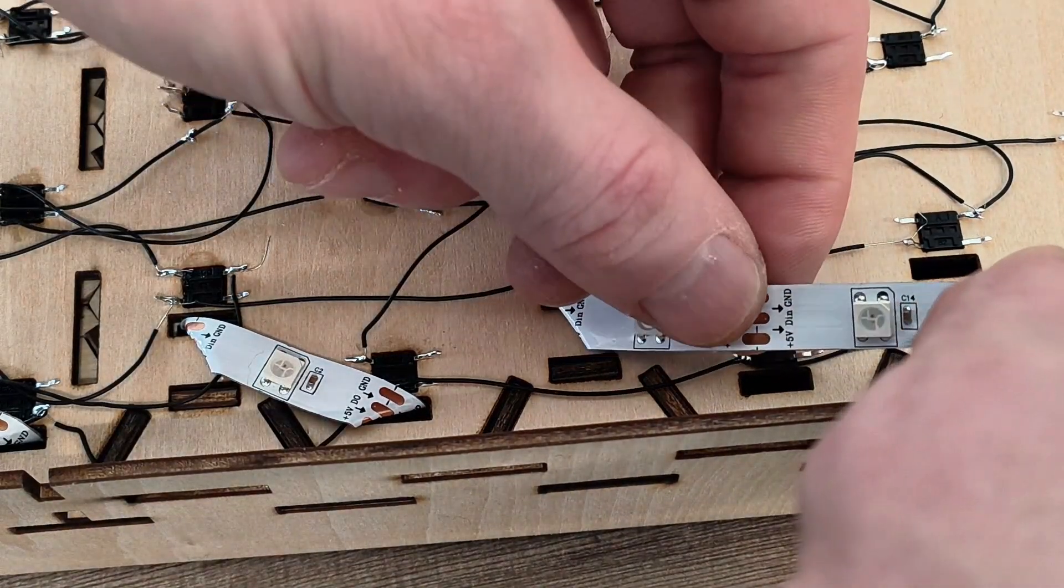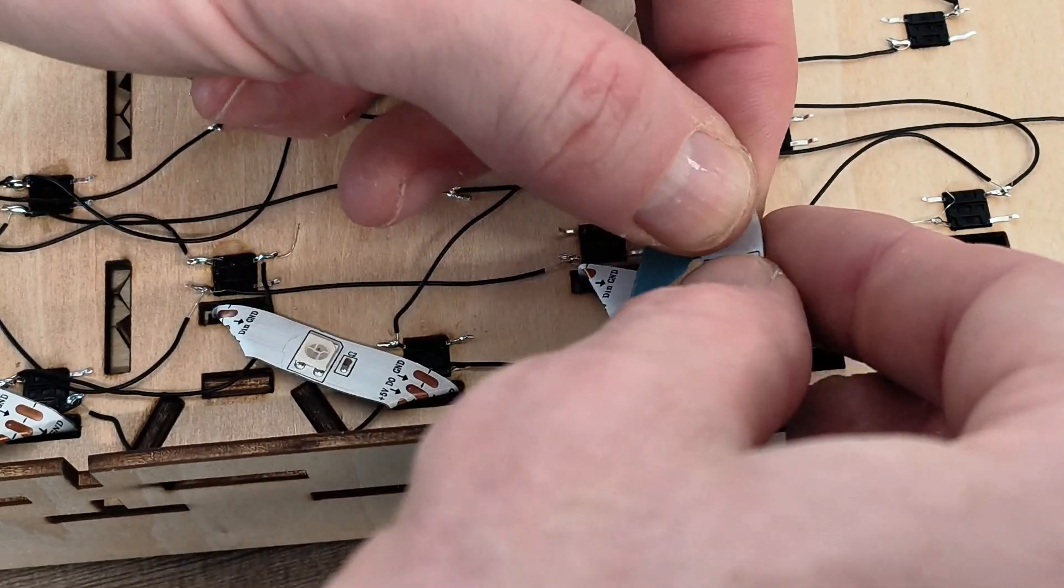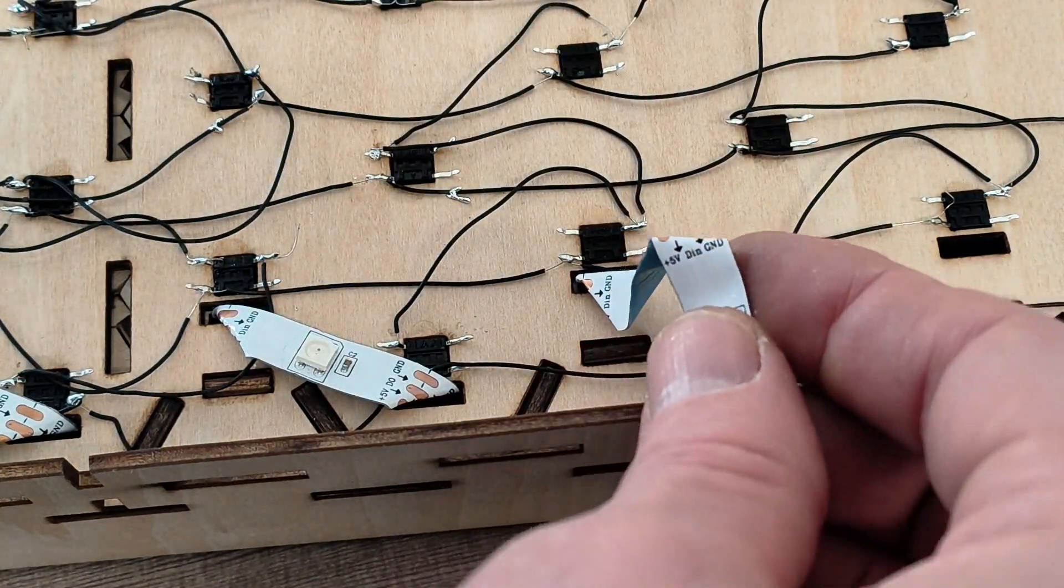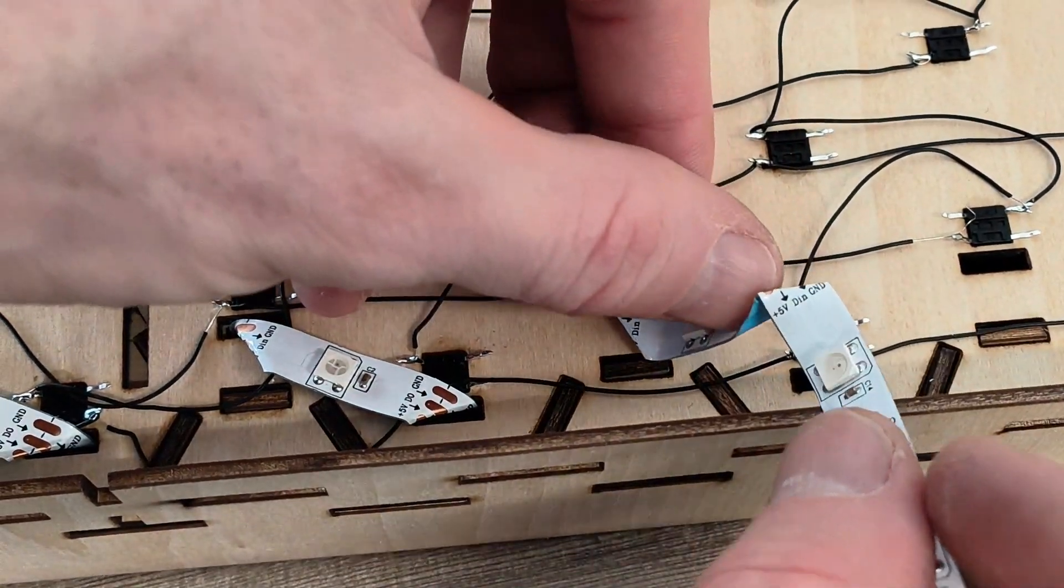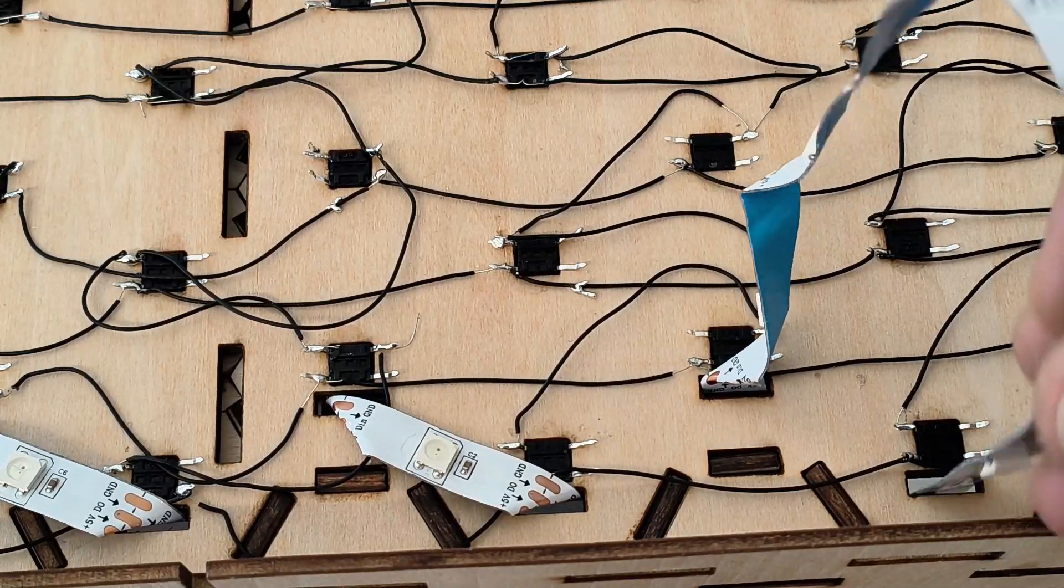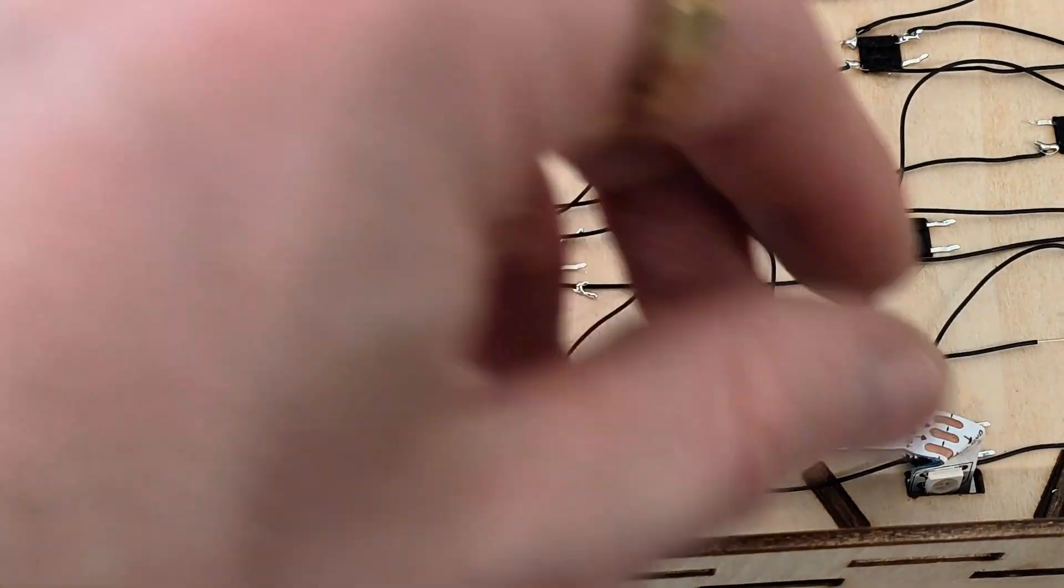And then right at the crease, we're going to also bend it away from us at about 45 degrees. And then we'll just feed it in. And then you'll see that it'll go in nicely like so.